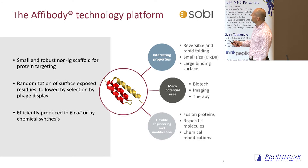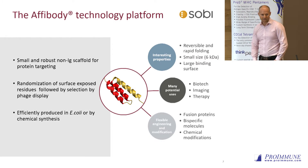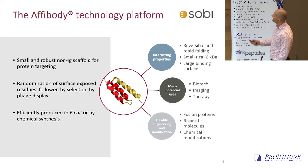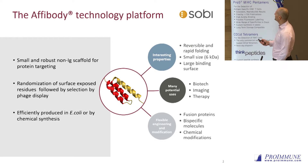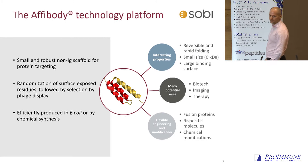It's three alpha helices, two of which have 13 variable amino acids that we vary, and using big libraries of these we can select binders to basically any protein. They are very efficiently produced in E. coli or by synthesis, they're very small — six kilodaltons — and have rapid folding. They're used for therapy but also for biotech imaging and other applications, and you can easily make bispecifics, fusion proteins, or other modifications in this platform.